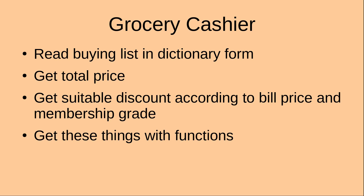Hi everyone, welcome to the Python tutorial. In this tutorial, I'm going to simulate a grocery cashier. I would have a buying list in the form of a dictionary and then I will find the total price of the buying list according to the price information of the grocery store. After I've got the total price, I would find the suitable discount according to the total bill price and the membership grade of the customer. I would like to find out all these values using some user-defined functions.